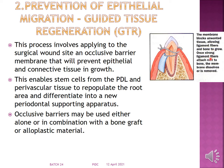Once strong ligament fibers attach to the root, the membrane dissolves or is removed. This enables stem cells from the periodontal ligament and perivascular tissues to repopulate the wounded area and differentiate into a new periodontal supporting and attaching apparatus. Without this barrier, cells from the epithelium would occupy this space; the barrier ensures periodontal ligament cells form the correct regenerative tissue.